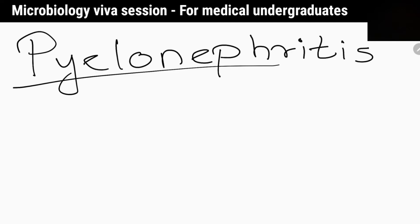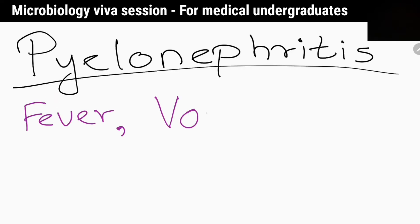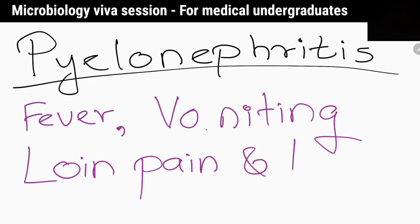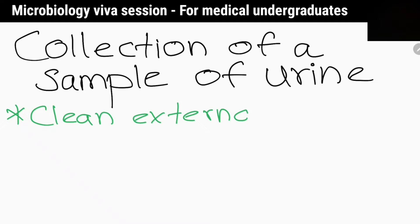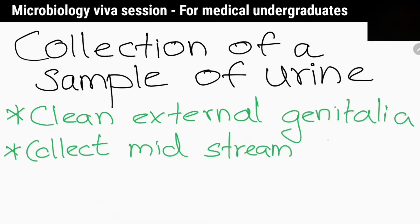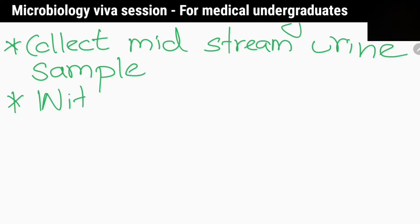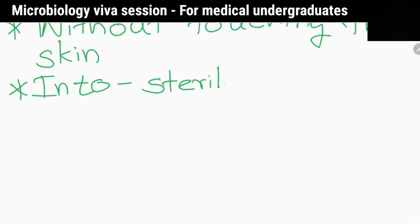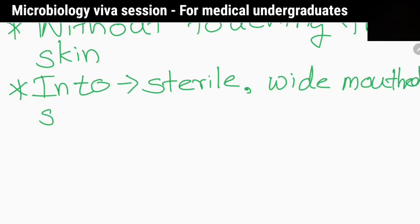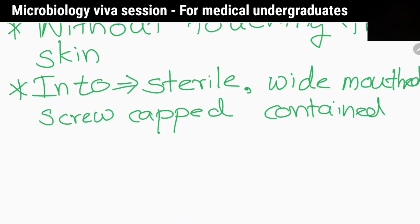What are the clinical features of pyelonephritis? Fever, vomiting, loin pain and tenderness. Tell me about the collection of a urine sample for investigation. First, clean the genitalia with soap and water and allow to dry, then collect a midstream urine sample without touching the skin into a sterile wide-mouth screw cap container provided by the lab.